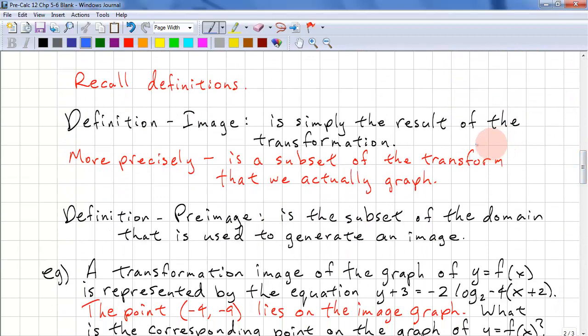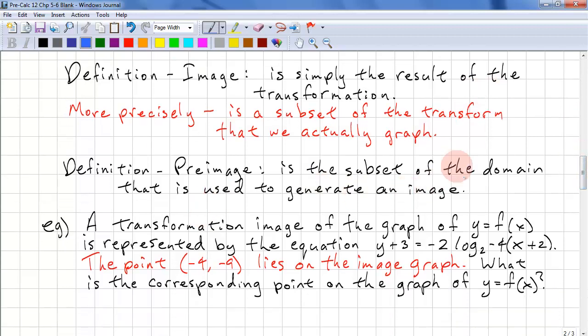Here's the final definitions. Image is simply the result of the subset of the transformation. And the pre-image is the subset of the domain that is used to generate an image.